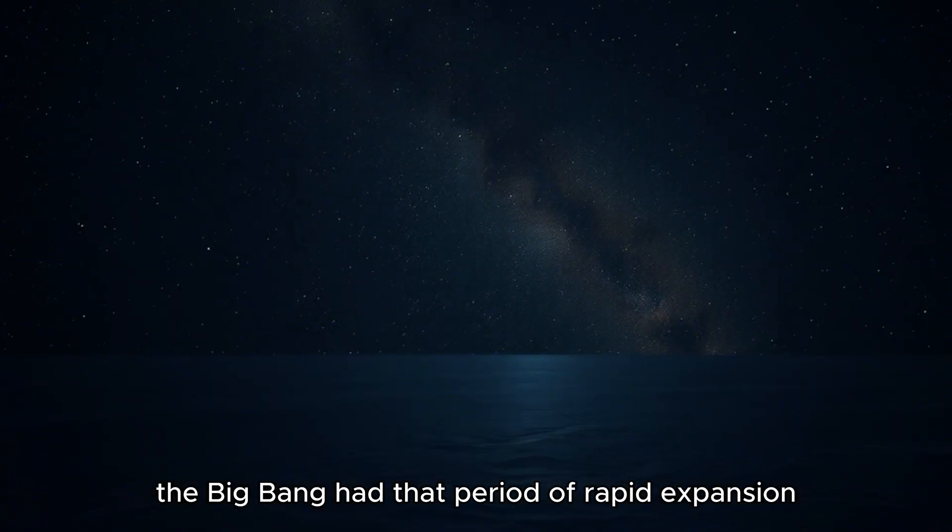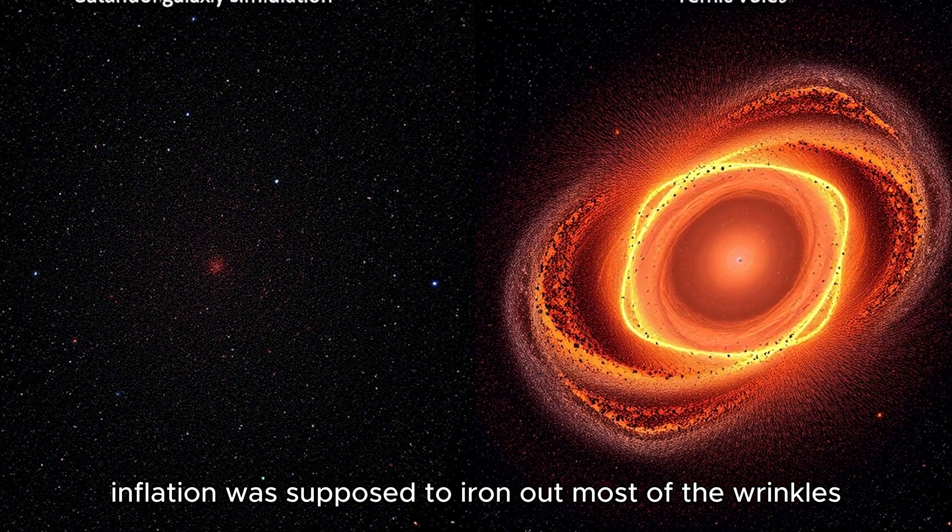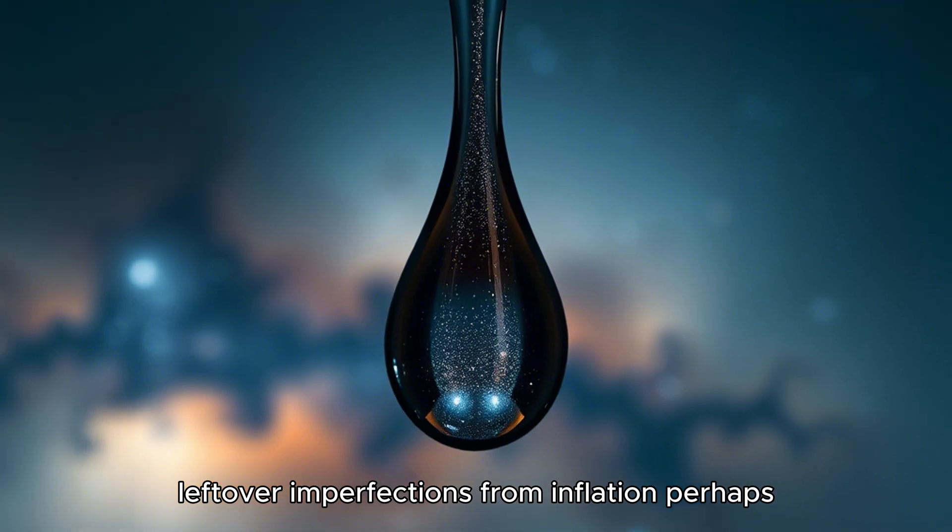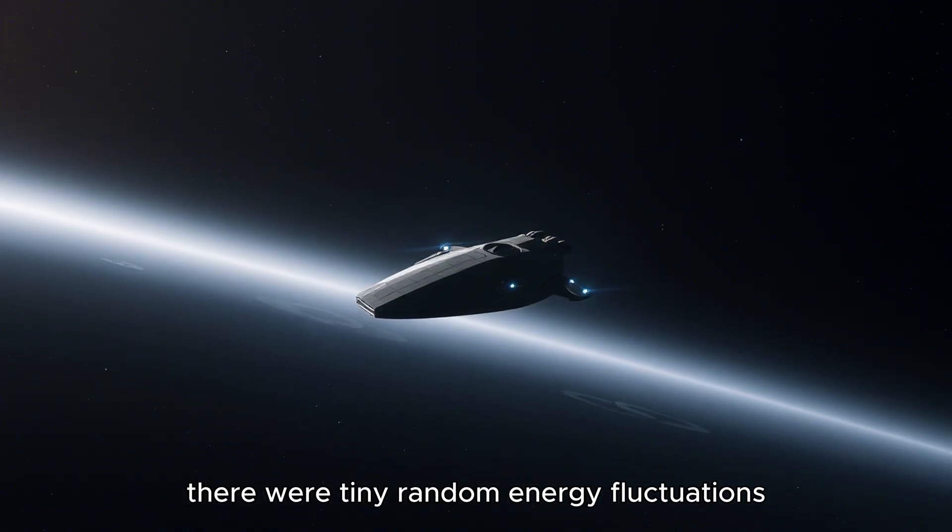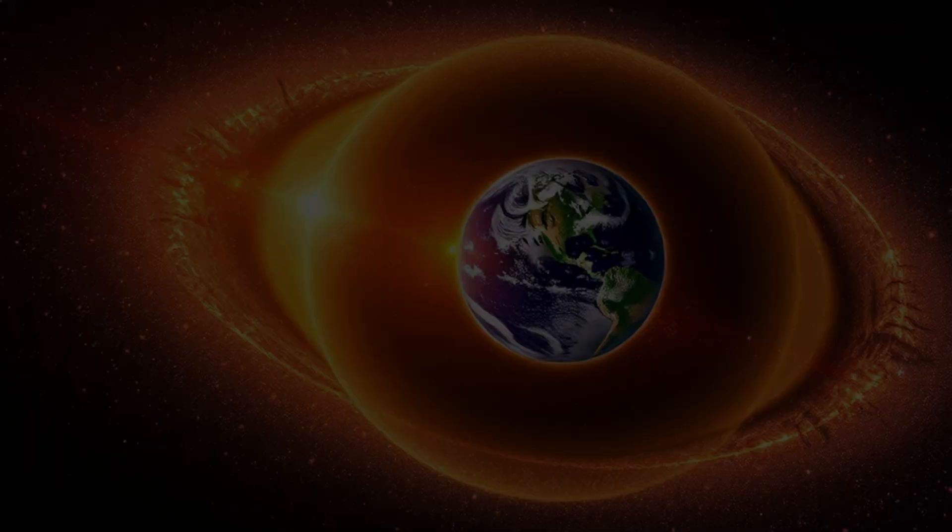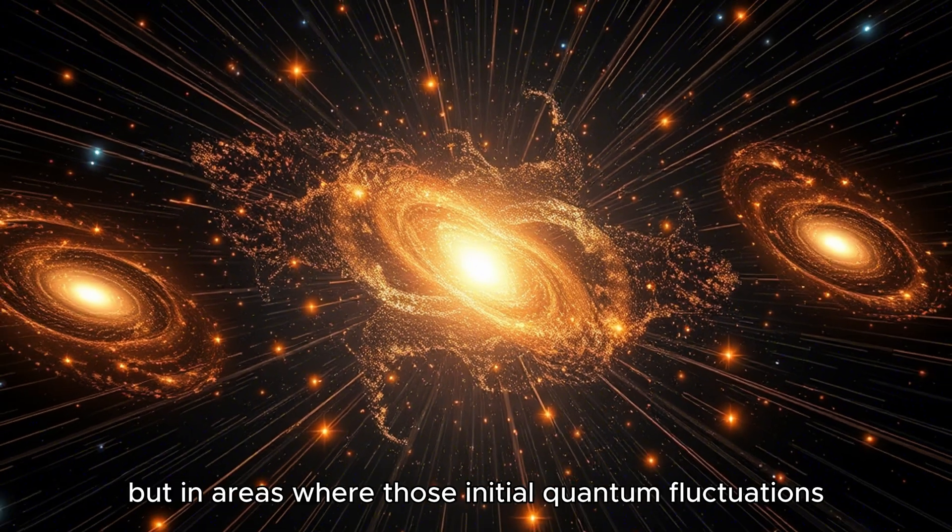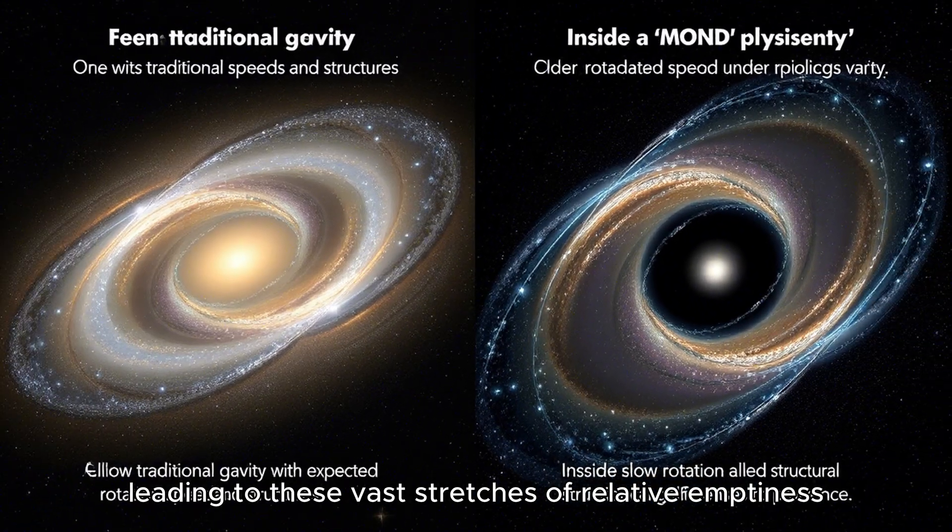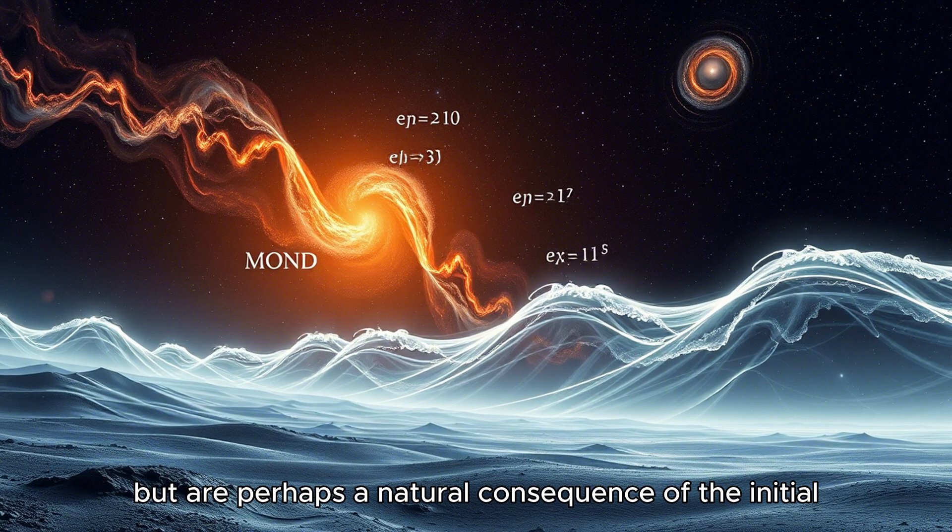And connecting this back to the very beginning, the Big Bang had that period of rapid expansion, inflation, right? Which supposedly smoothed everything out. It did, theoretically. Inflation was supposed to iron out most of the wrinkles from the very early universe. But the very existence of these huge voids, these massive under-dense regions, suggests that maybe the smoothing wasn't quite as perfect as we assumed. So the voids are like leftover imperfections from inflation. Perhaps. Or maybe they originate even earlier, from the quantum realm. Just moments after the Big Bang, the universe wasn't perfectly uniform. There were tiny, random energy fluctuations, quantum fluctuations. Like tiny ripples on a pond. A good analogy. Those ripples were the seeds of all future structure. Where the ripples were slightly higher, denser, matter eventually clumped together to form galaxies and clusters. But in areas where those initial quantum fluctuations were perhaps a bit weaker, less intense, maybe less matter accumulated over billions of years, leading to these vast stretches of relative emptiness, the voids. It's a plausible link. It suggests voids aren't just random gaps, but are perhaps a natural consequence of the initial quantum state of the universe. They could be telling us something fundamental about those very first moments.